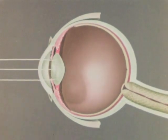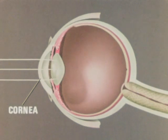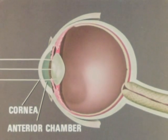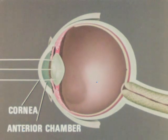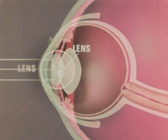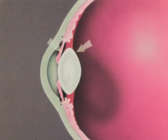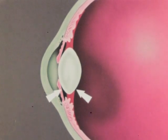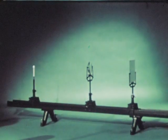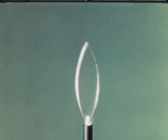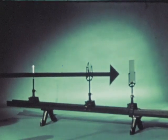Light enters the eye through the transparent cornea and passes through the anterior chamber containing a liquid substance, the aqueous humor. Passing through the pupil, the light rays converge on the lens. The lens is transparent and bi-convex — convex on both sides. If you remember your laws of light refraction, you know that a bi-convex lens will cause light rays coming from an object to meet at a point called the principal focus.